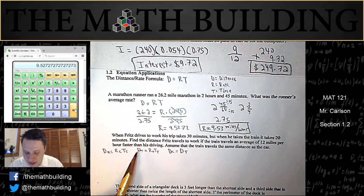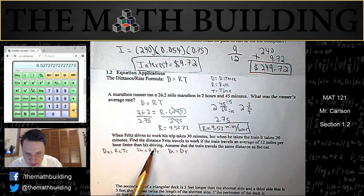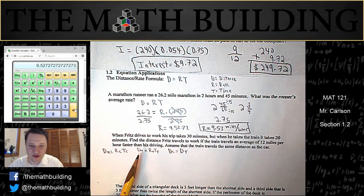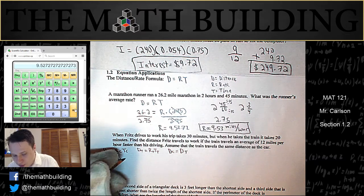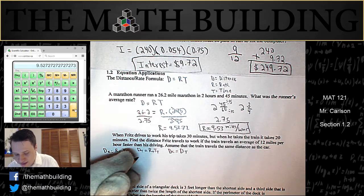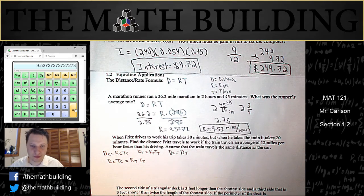And so what that means is that if this equals this, then this piece equals this piece. Or in other words, if dc equals dt, then that means the rate time of the car will equal the rate time of the train, and I've gotten rid of d altogether.